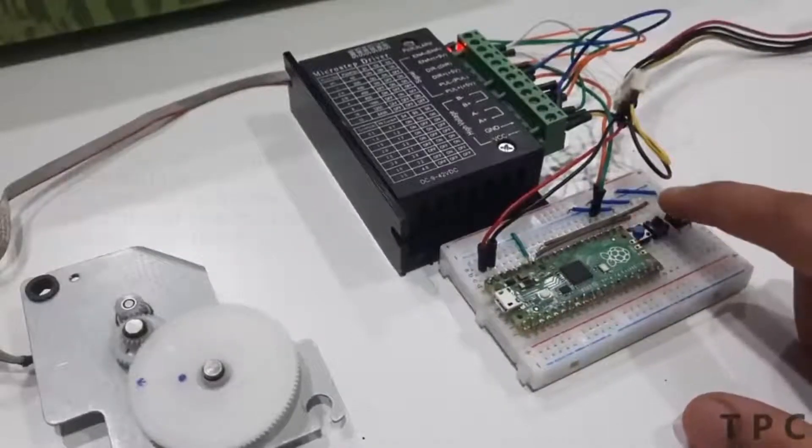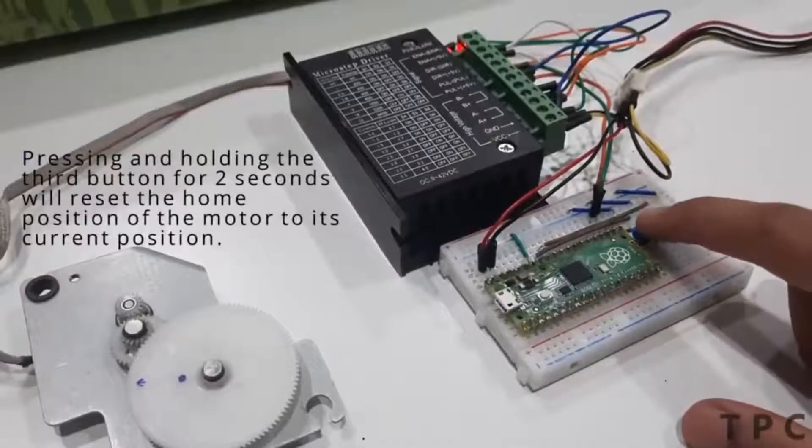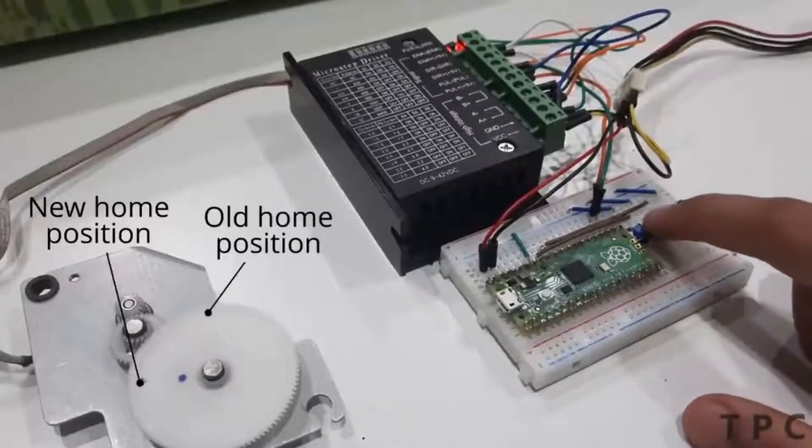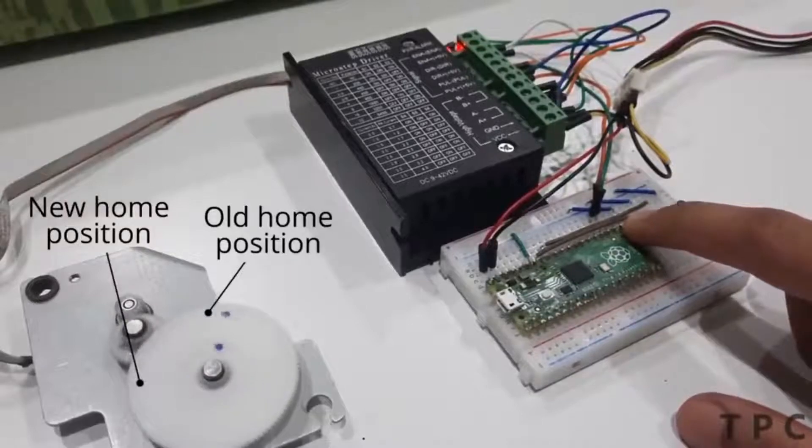But if you want to create a new home position for the motor, just press and hold the third button for two seconds. This will set the current location of the stepper motor as the new home position. What do you think about this project?